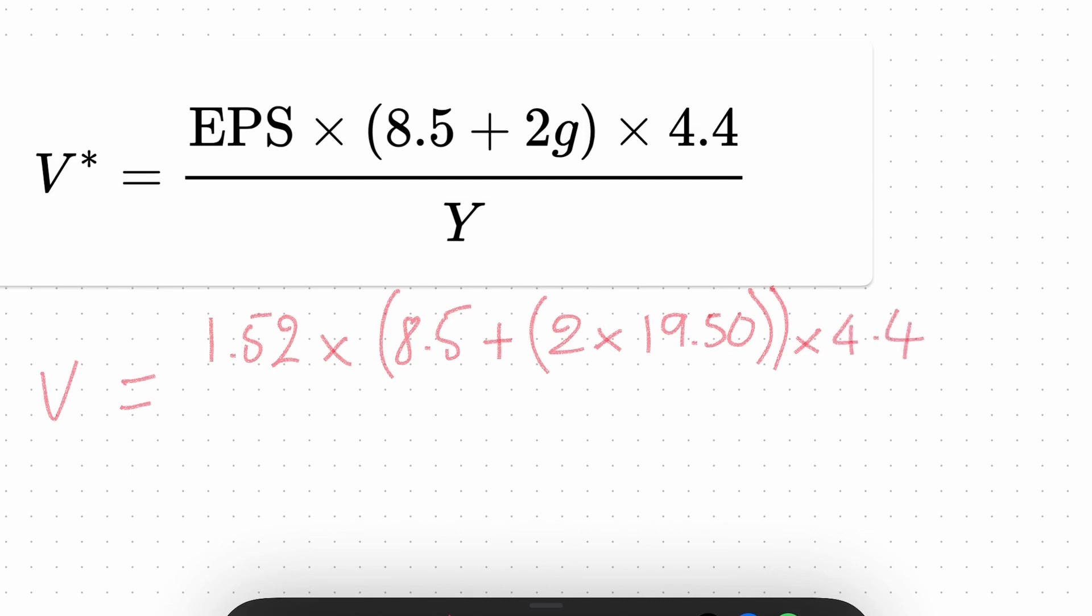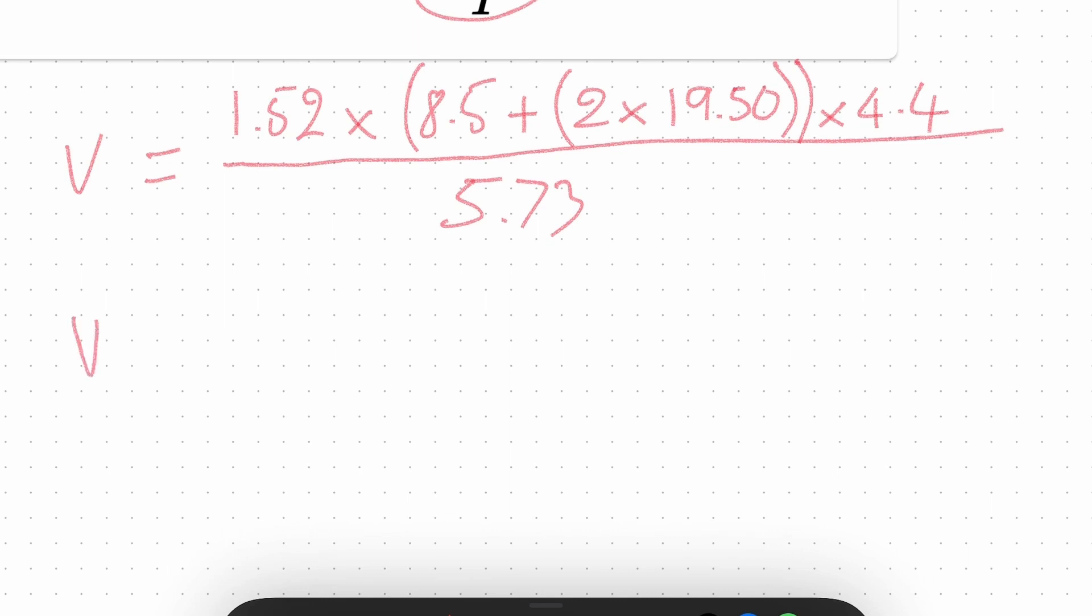This is the first time I'm doing this today as well, so I don't know what the answer is going to be. I don't know if the intrinsic value is going to be lower or higher than Lattice's current share price. Let's figure it out together. Earlier I already looked at the triple-A bond, it was 5.73, so we use it again. Value equals 1.52 multiplied by 8.5 plus 2 times 19.50, that's 39.